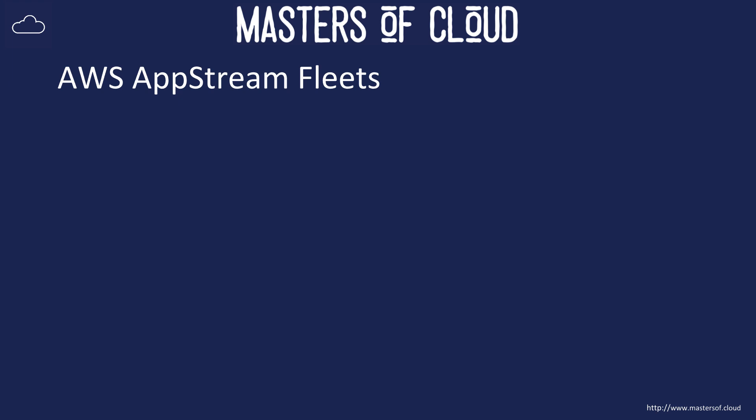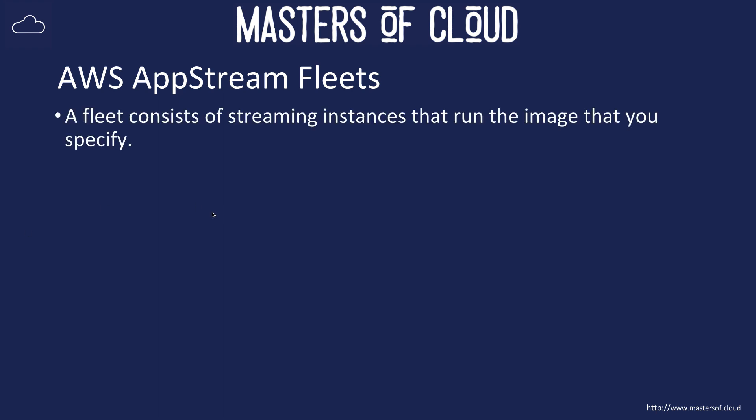Welcome to this video. We're going to quickly discuss what AWS AppStream fleets are for. An AppStream fleet consists of streaming instances that run the image that you specify.